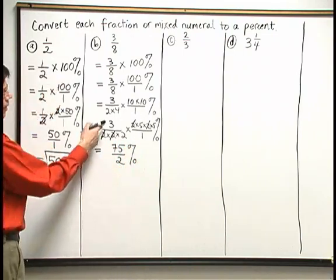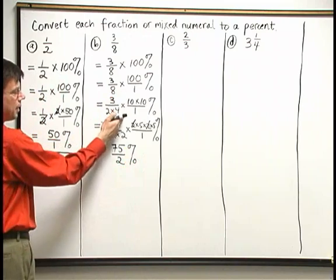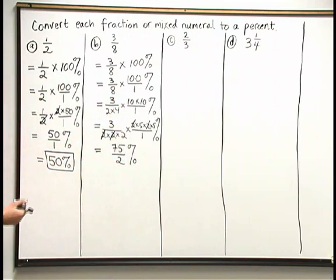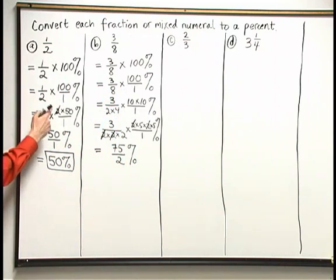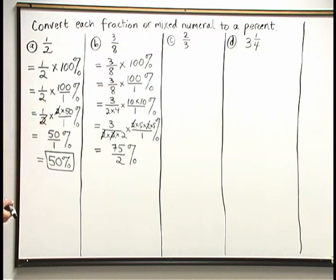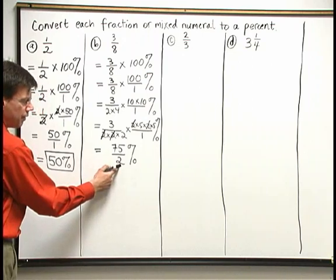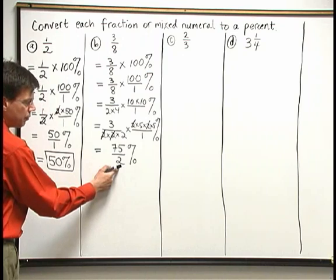So notice in the second one, I took my time cancelling. I just broke down those numbers a little bit at a time. Well, in A, I could see that I was only going to be able to cancel 2. So I tried to break down 100 in a way where I could get that 2 cancelled right away. Now, we still can simplify this 75 halves percent a little bit more.